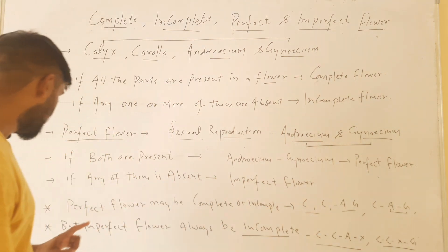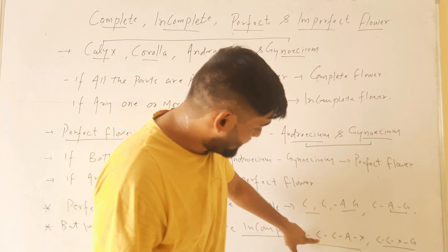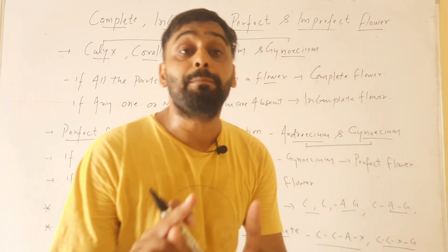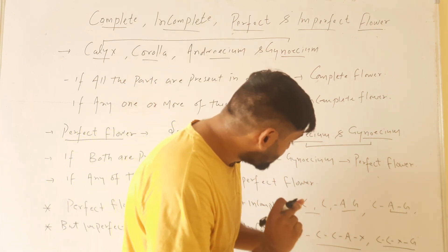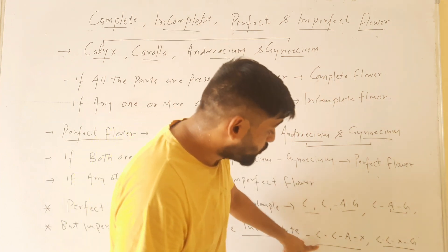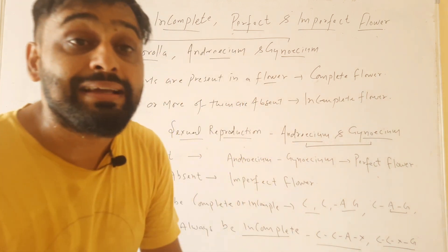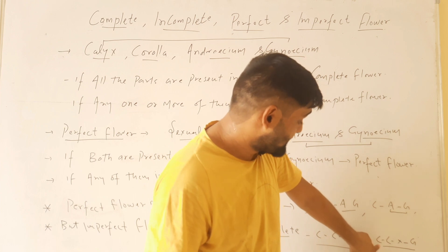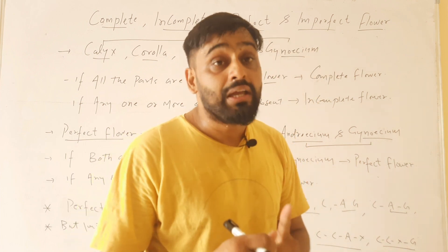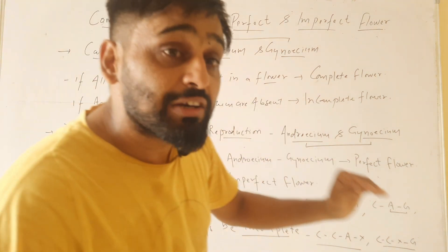But an imperfect flower will always be incomplete. Look at this: here we have calyx, corolla, androecium — but gynoecium is not there. Since gynoecium is absent, it is an imperfect flower. And since all four parts are not there, it is also an incomplete flower. In another situation, calyx, corolla, and gynoecium are present but androecium is absent — so it is again incomplete and imperfect.